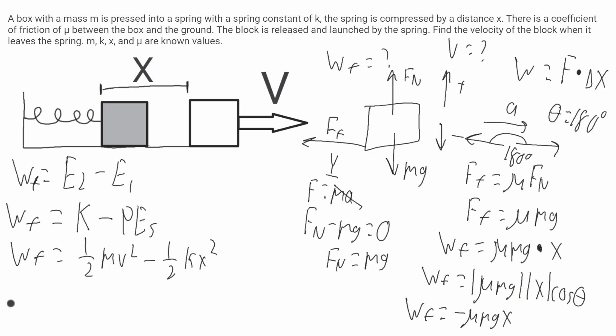Now I can plug this work of friction right into here. I'll get negative mu mg x is equal to 1/2 mv squared minus 1/2 kx squared.